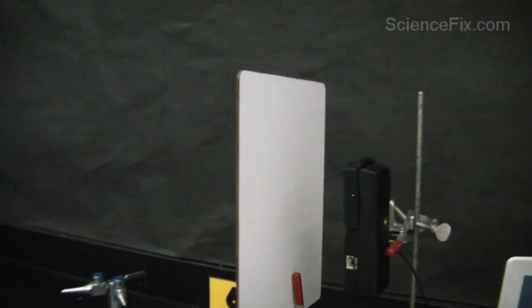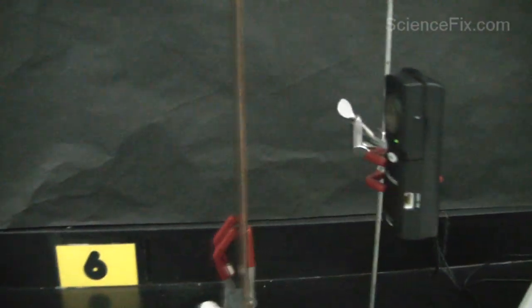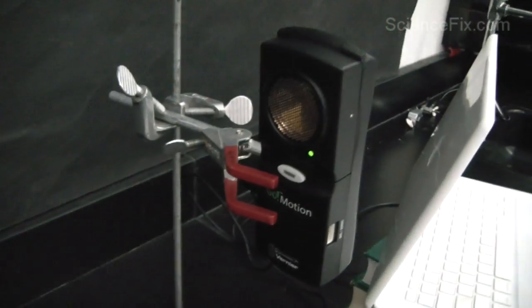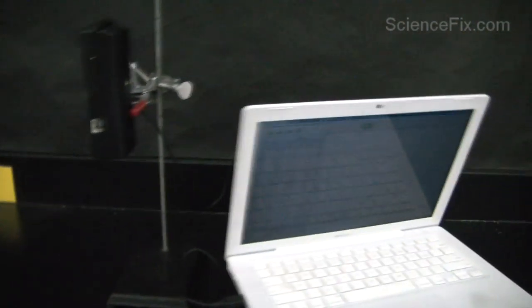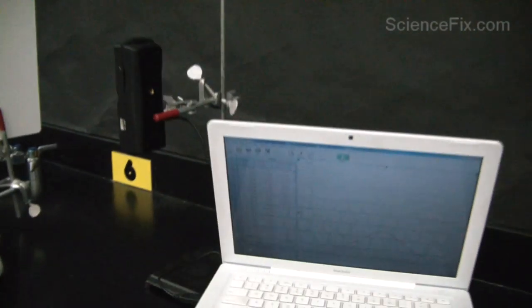That black box sends out ultrasound waves that reflect off the surface of the whiteboard and come right back to the sensor. The sound waves travel at a certain speed, and depending on how much time it takes for them to get back to the sensor, the sensor can determine the position of the whiteboard.